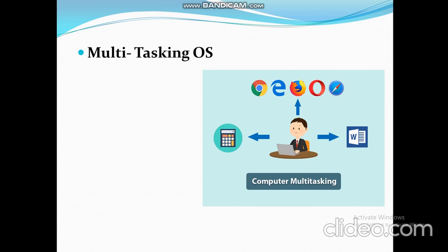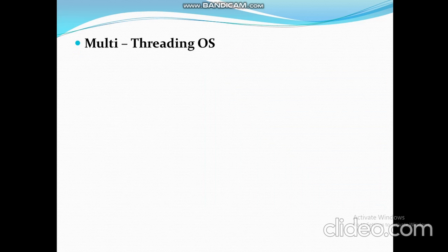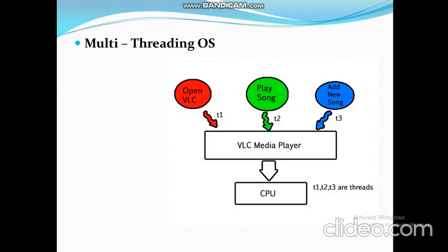Today, most operating systems fall under this category — for example, Unix, Linux, Windows XP, Windows 7, Windows 8, Windows 8.1, Windows 10. Even on mobile phones we have this type of operating system, where we can do multiple tasks at the same time — listen to music in the background, do WhatsApp chatting, and use the calculator — all part of a multi-tasking operating system.